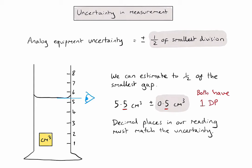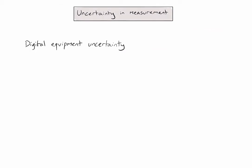Let's now look at digital equipment. For digital equipment, we have a slightly different convention to follow. We give uncertainty to plus or minus the smallest division or smallest measurement I can make, because we can't make any estimations beyond the number of decimal places that we're given.